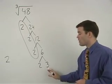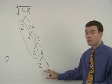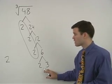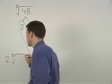The 2 and 3 that are left over will stay inside the cube root, multiplying together to make 6. So we have 2 times the cube root of 6.